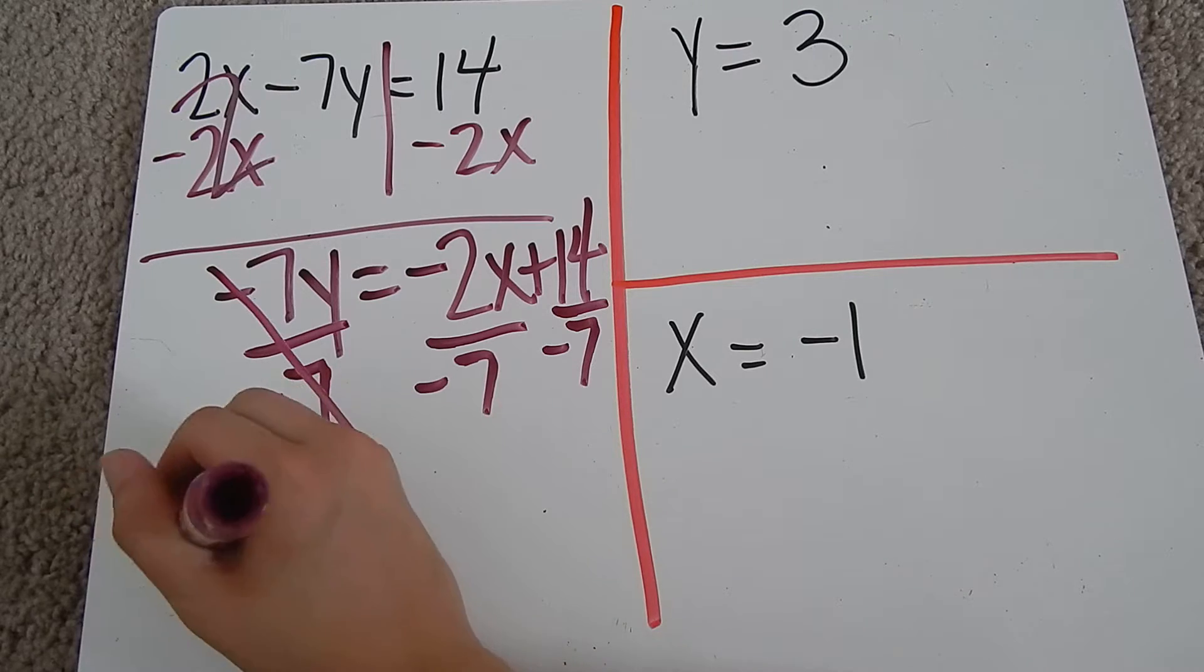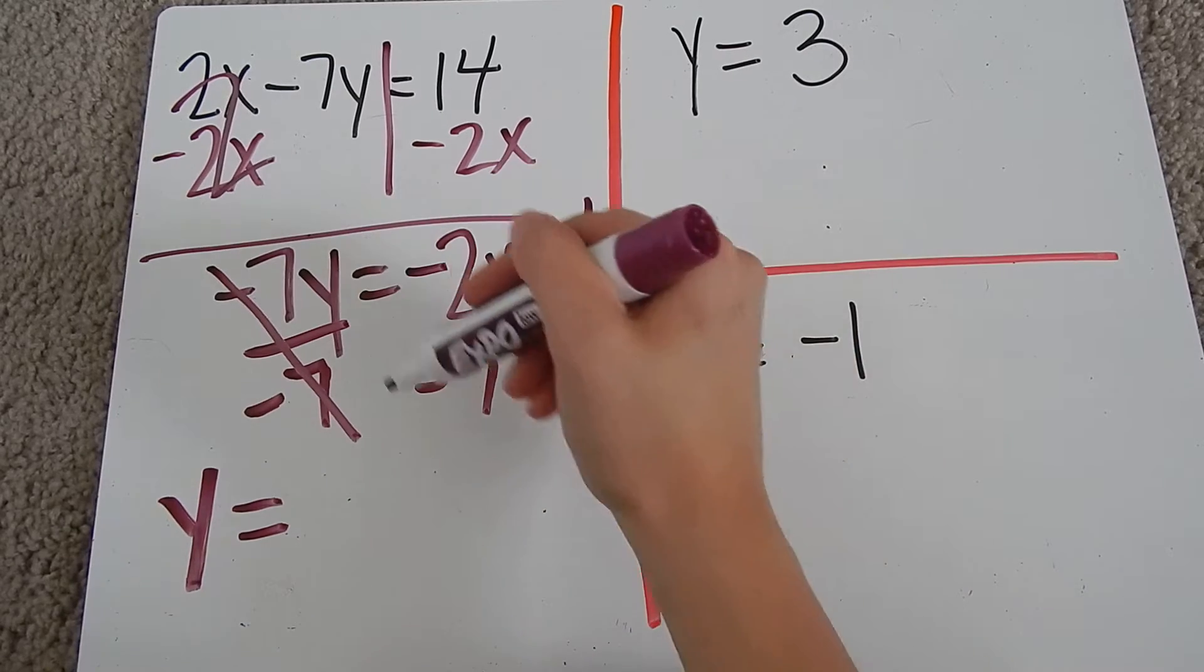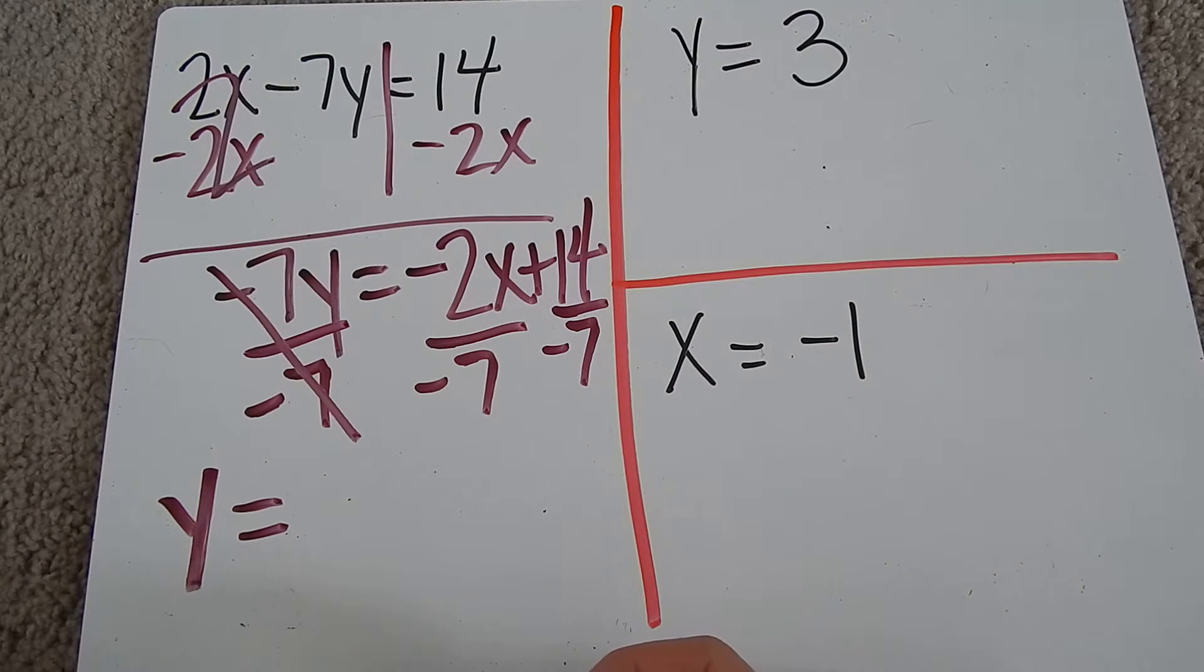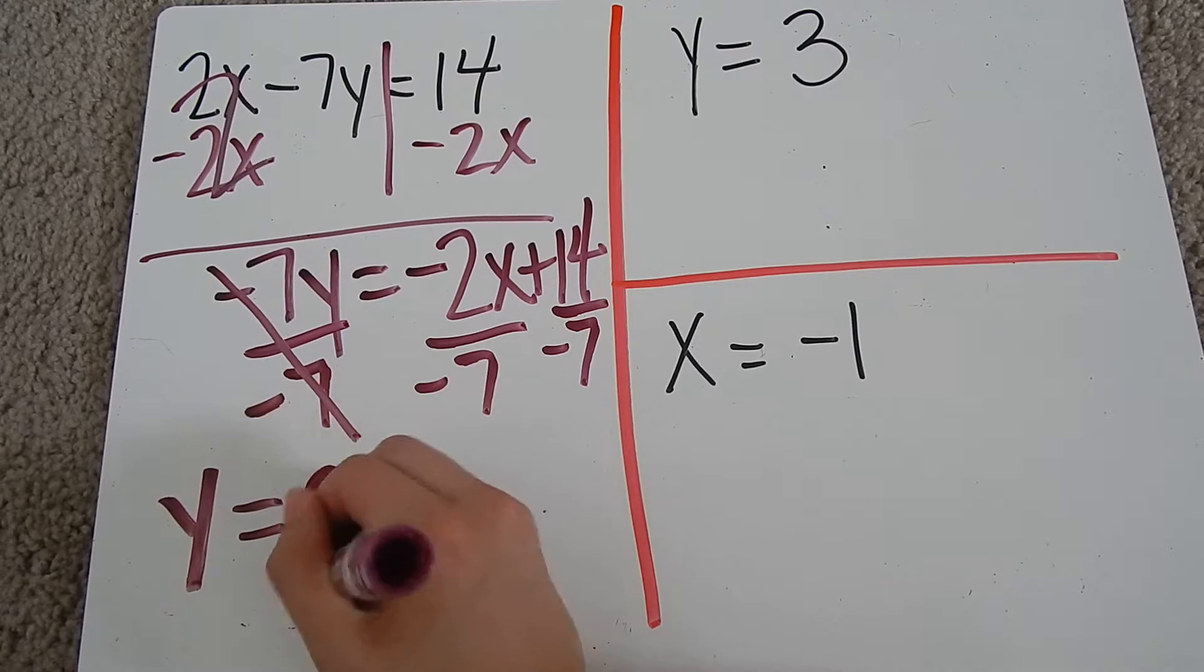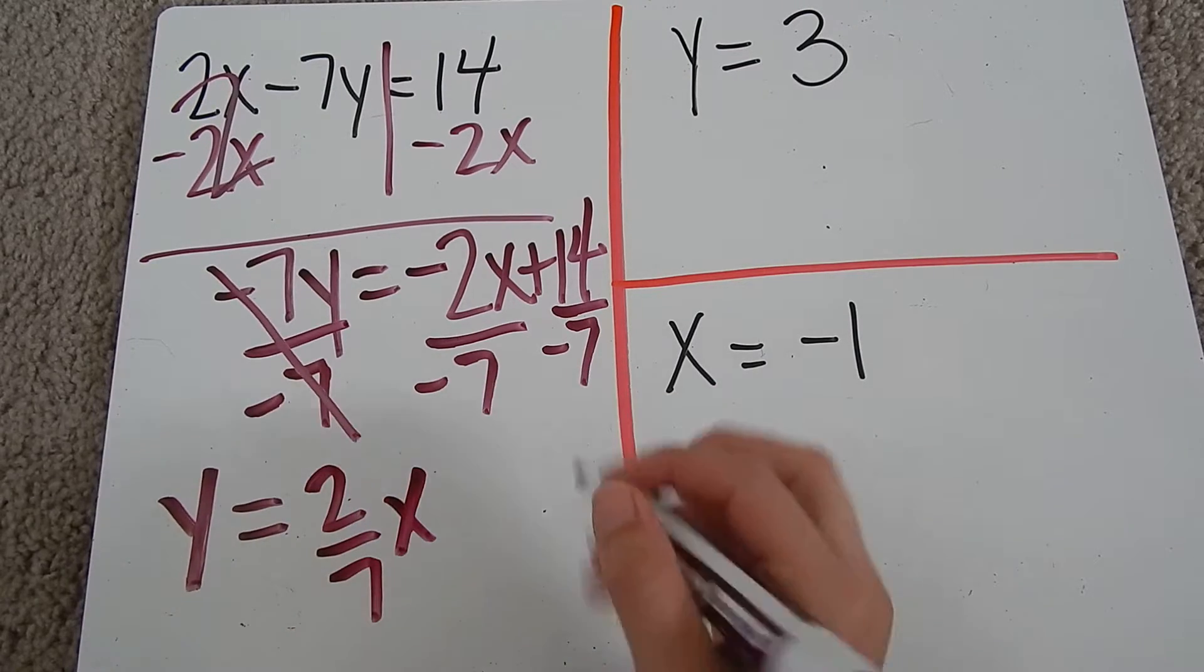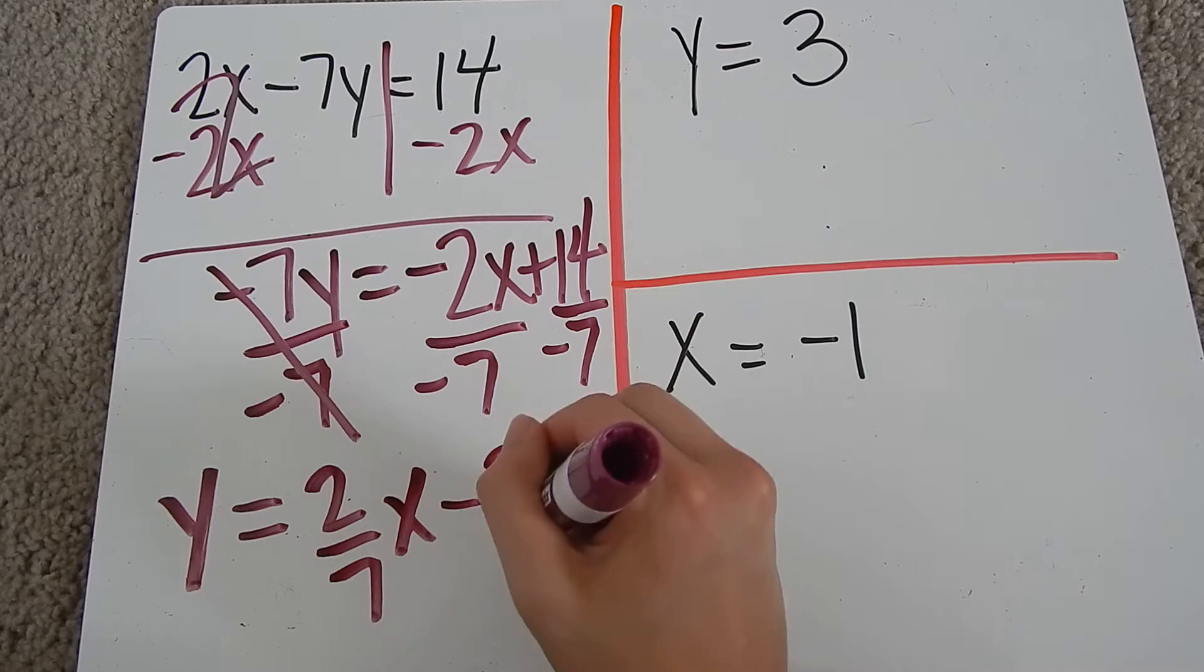I get y by itself, which is what I wanted. You can just plug that into the calculator and simplify the fraction there. That will simplify to positive 2 over 7x, and 14 divided by negative 7 is negative 2, so it's going to be minus 2.